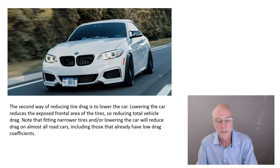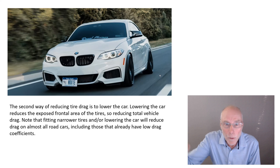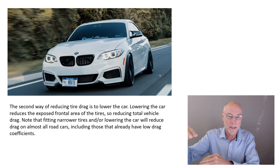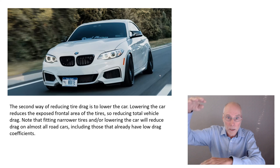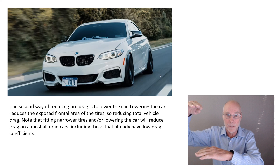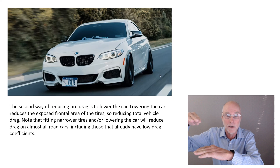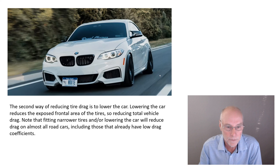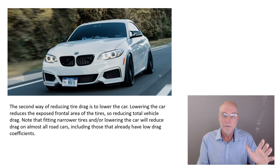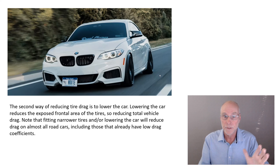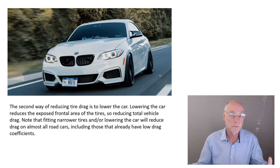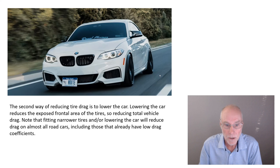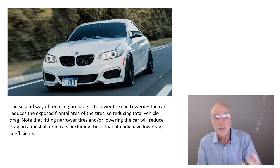The other way of lowering drag is to literally lower the car. If you lower the car, there's less exposed tyre area at the front. You might have started with that much exposed tyre area — lower the car an inch, you've now only got that much; lower it another inch, even less. So you're decreasing the projected frontal area of the car. Lowering the car may have other aerodynamic advantages as well, especially if you have a full smooth undertray. But here we're just concerned with decreasing the exposed area of the tyres and therefore decreasing projected frontal area.